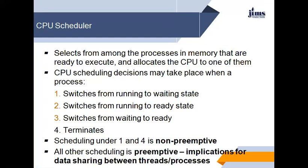Now we will see the dispatcher. The dispatcher is the module that gives control of the CPU to the process selected by the scheduler. This function involves switching context, switching to user mode, and jumping to the proper location in the newly loaded program. The dispatcher needs to be as fast as possible as it is run on every context switch. The time consumed by the dispatcher is known as dispatch latency.